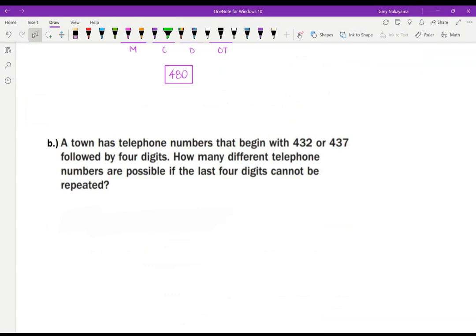A town has telephone numbers that begin with 432 or 437, followed by four digits. How many different telephone numbers are possible if the last four digits cannot be repeated? So you've got to think about, I've got 432, that's the beginning, those numbers. Then I'm going to have four more digits. So that's a total of seven digits. Now, how many choices do I have for the first digit? Well, they both started with a four. So that's only one choice. The next number, they both had a three in them. The next one, 432 or 437, I have two choices. And then how many different telephone numbers are possible if the last four digits cannot be repeated? So we're saying we've already used three digits with 432 and 437. So how many digits are left? Well, we started with 10 and we've used three. So we have seven and then we have six and then we have five and then we have four for a total of 1,680 phone numbers.